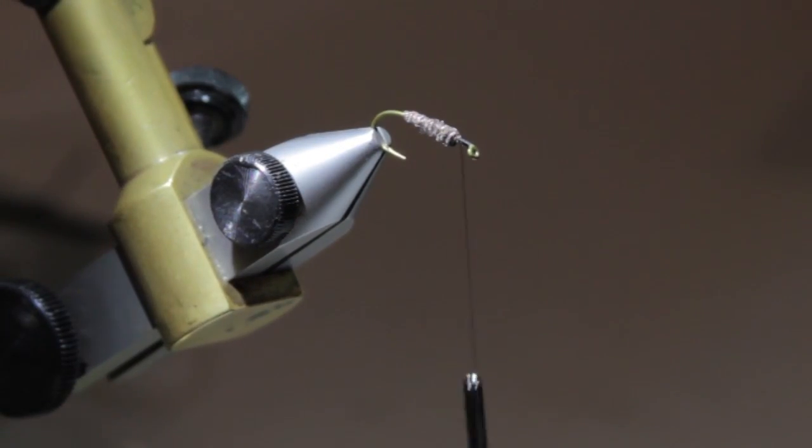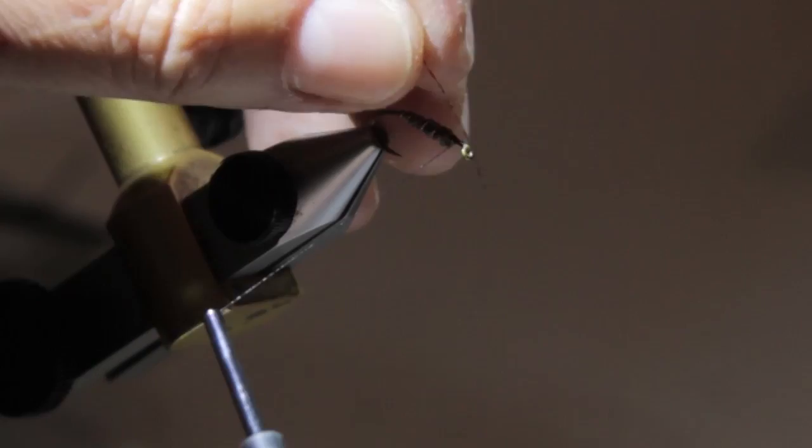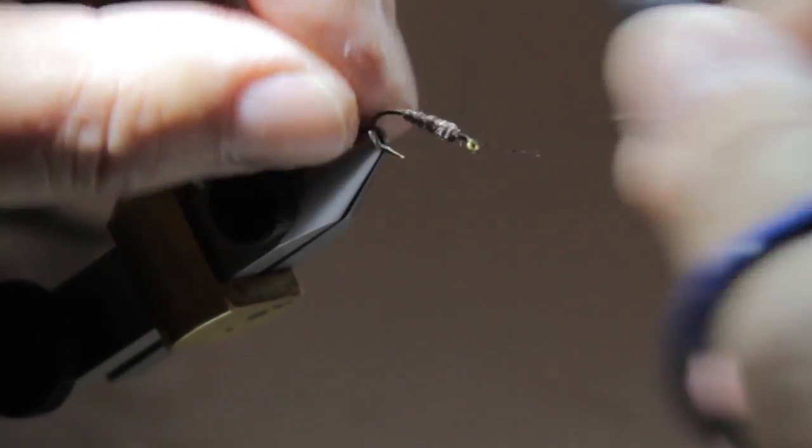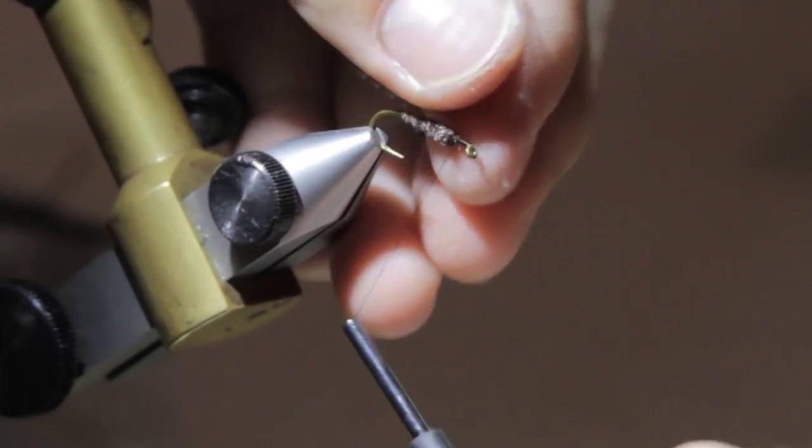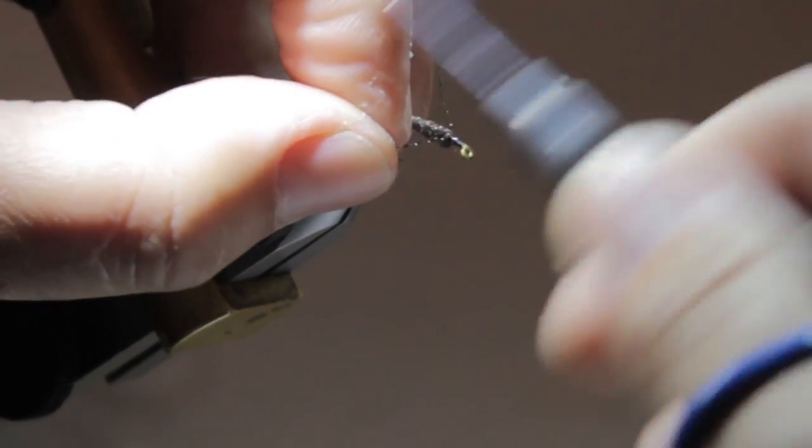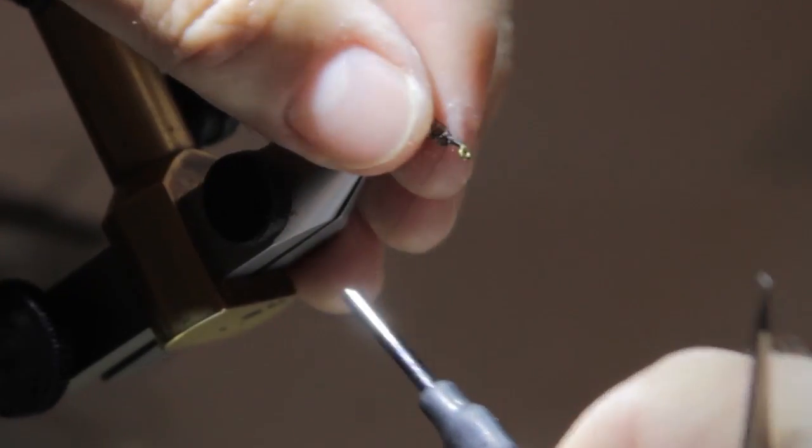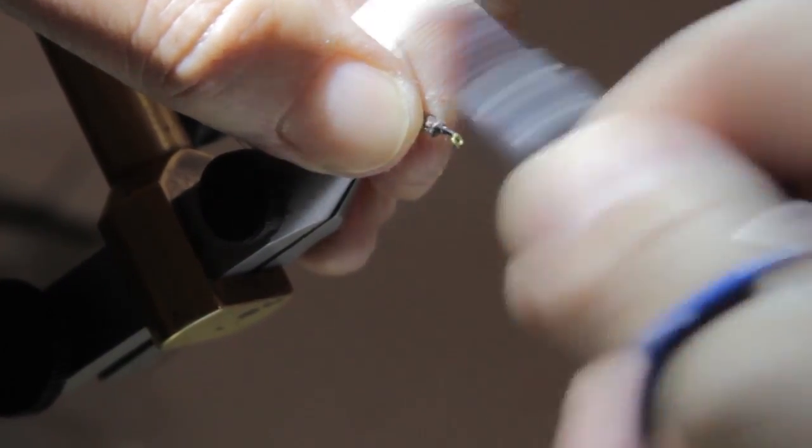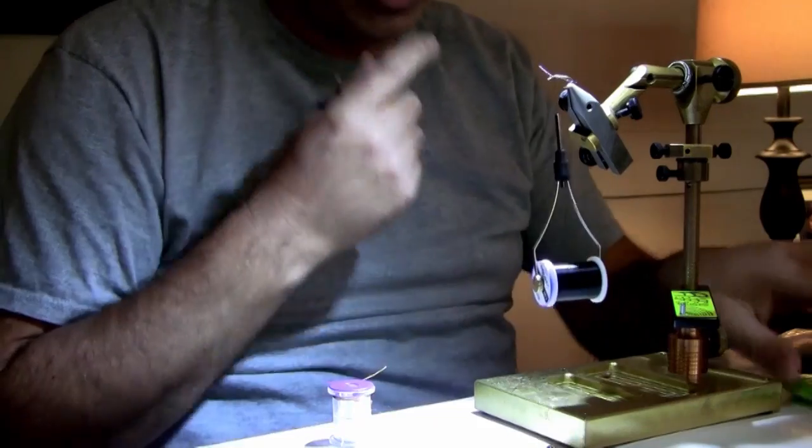Put our first set of legs in. We've got black crystal flash. You could use a rubber leg if you wanted to. This is the original pattern as I found it. Sorry I don't know the name of this fly. If someone is familiar with it please share it with me and I will get it posted as to the correct name.